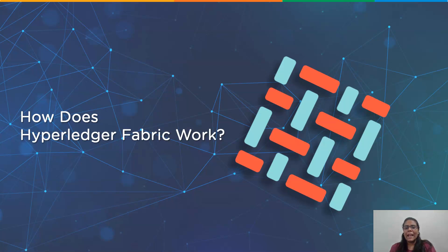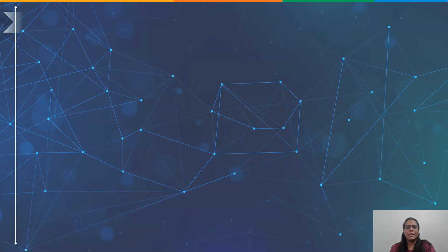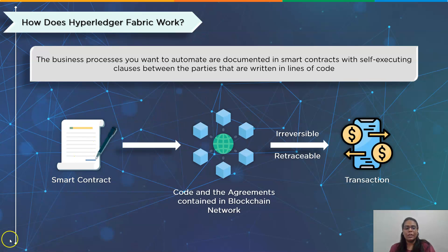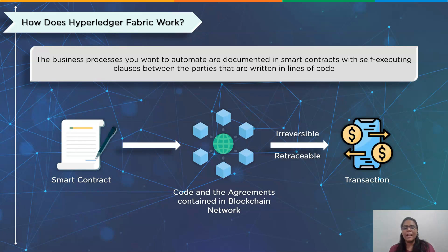Hyperledger Fabric is an open, tested, enterprise-grade distributed ledger platform. It proposes unique privacy controls so that only the information you want to share is shared with permitted network users. The business processes you want to automate are documented in smart contracts with self-executing clauses written in lines of code. The code and agreements contained therein exist across the distributed decentralized blockchain network. Because transactions are retraceable and irreversible, organizations can trust one another, enabling them to make better decisions quickly while saving time, money, and risk.